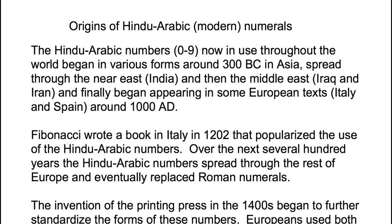The origins of the Hindu-Arabic modern numerals, 0 through 9, now in use throughout the world, began in various forms around 300 B.C. in Asia. They spread through the Near East, India, and then the Middle East — around Iraq and Iran — and finally began appearing in some European texts in Italy and Spain around 1,000. It was Fibonacci who wrote a book in Italy in 1202 that really popularized the use of these Hindu-Arabic Numbers, and over the next several hundred years they spread through the rest of Europe and eventually replaced the Roman numerals.